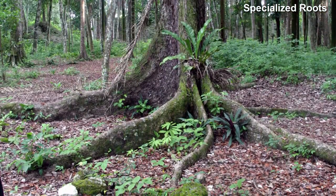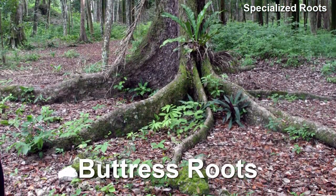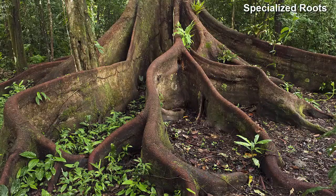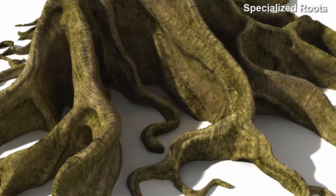Some tropical trees growing in shallow soils produce huge buttress-like roots toward the base of the trunk, giving them great stability. Except for their angular appearance, these roots look like a part of the trunk.